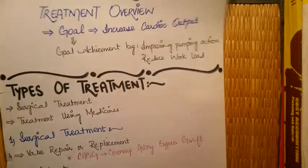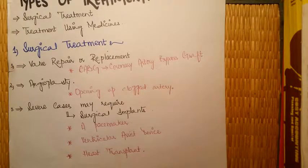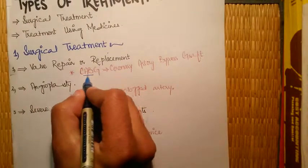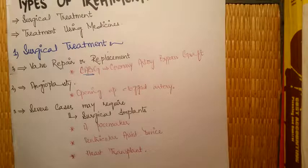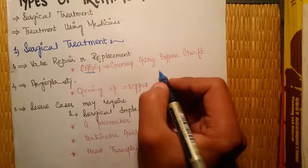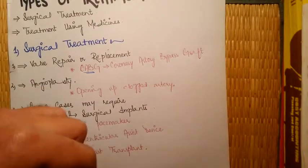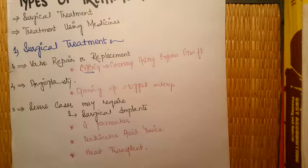Surgical treatments could be done by valve repair or replacement. Another technique is CABG, or coronary artery bypass graft. As we know, the main cause of congestive cardiac failure is coronary artery disease, where the coronary artery can be clogged or blocked due to fat deposition. By grafting, the workload on the heart can be reduced and the pumping action made efficient.